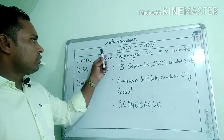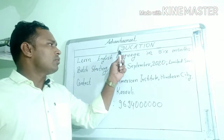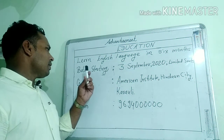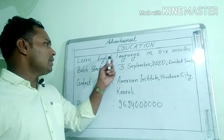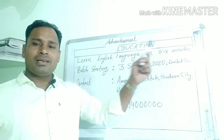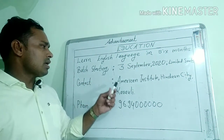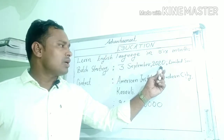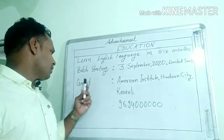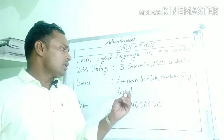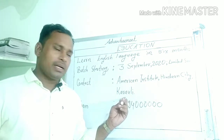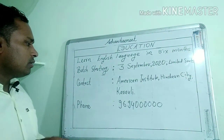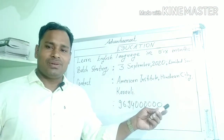इस advertisement में title block में लिखना है 'Education'। इसमें सबसे पहले course का नाम लिखोगे: 'Learn English Language in Six Months.' Batch starting date लिखी है: 3rd September 2020. Limited seats — सीमित सीटें हैं। Admission के लिए contact: American Institute, Hindaun City, Karauli — यह address लिखा है।